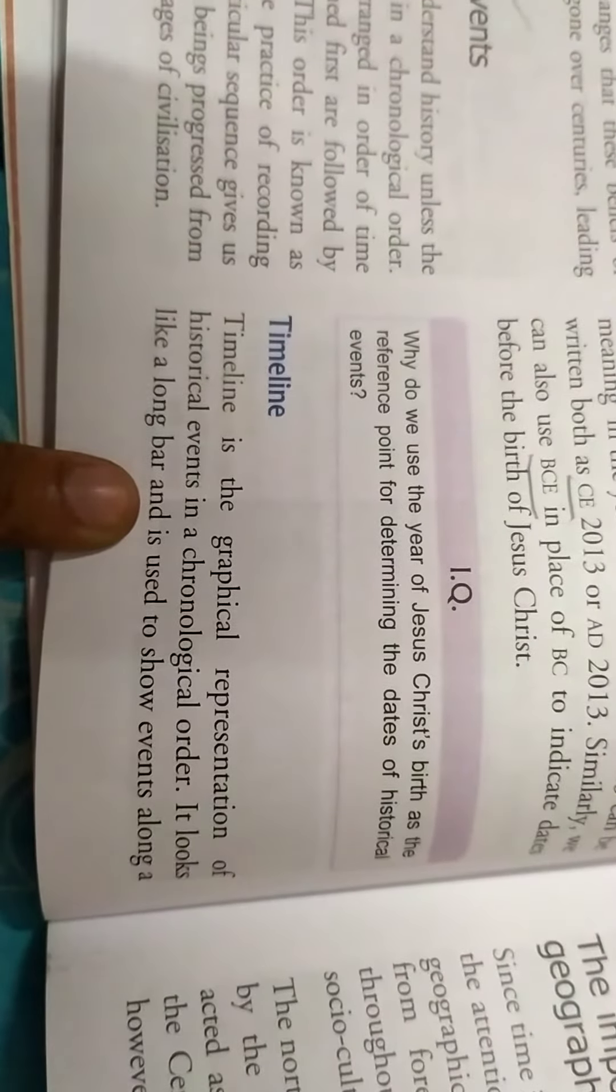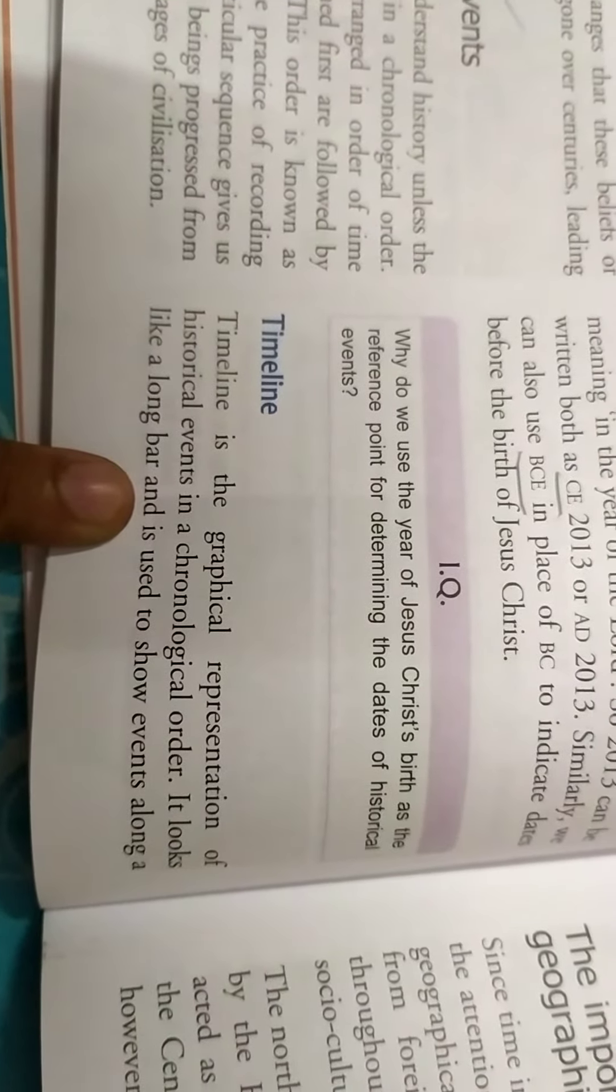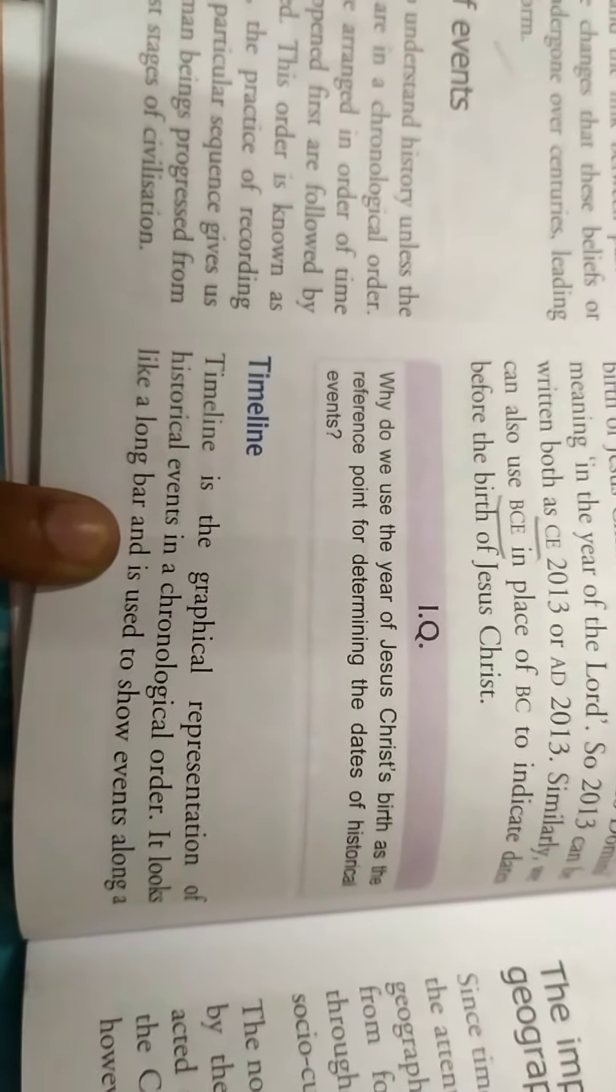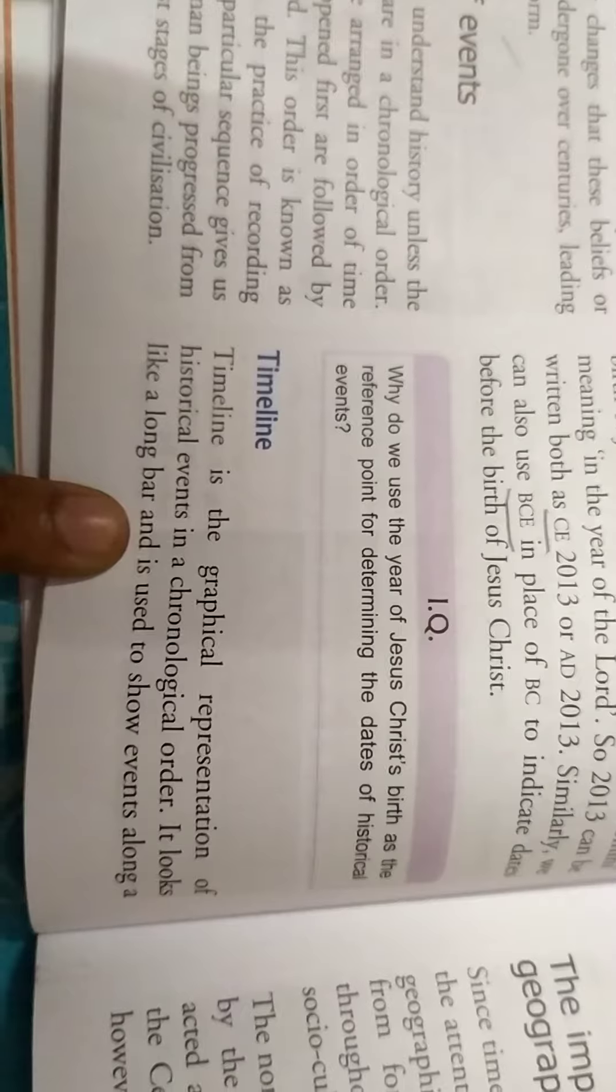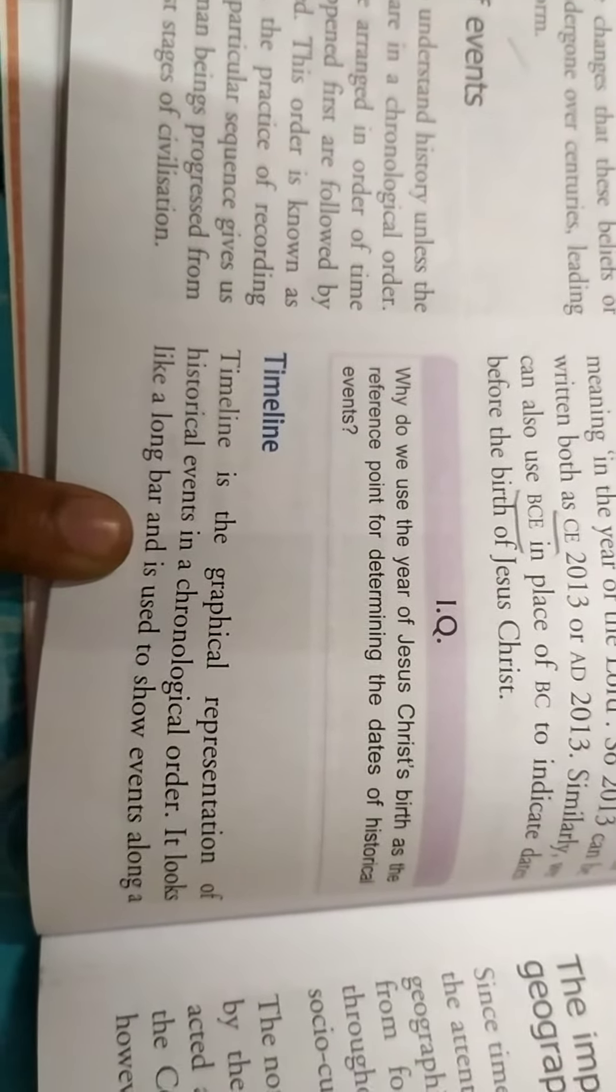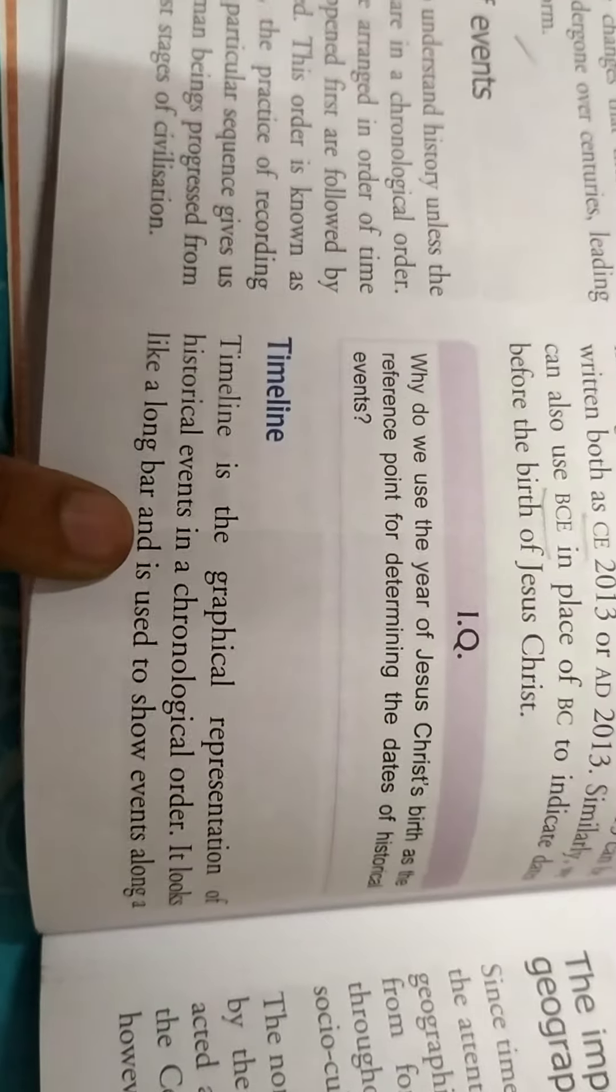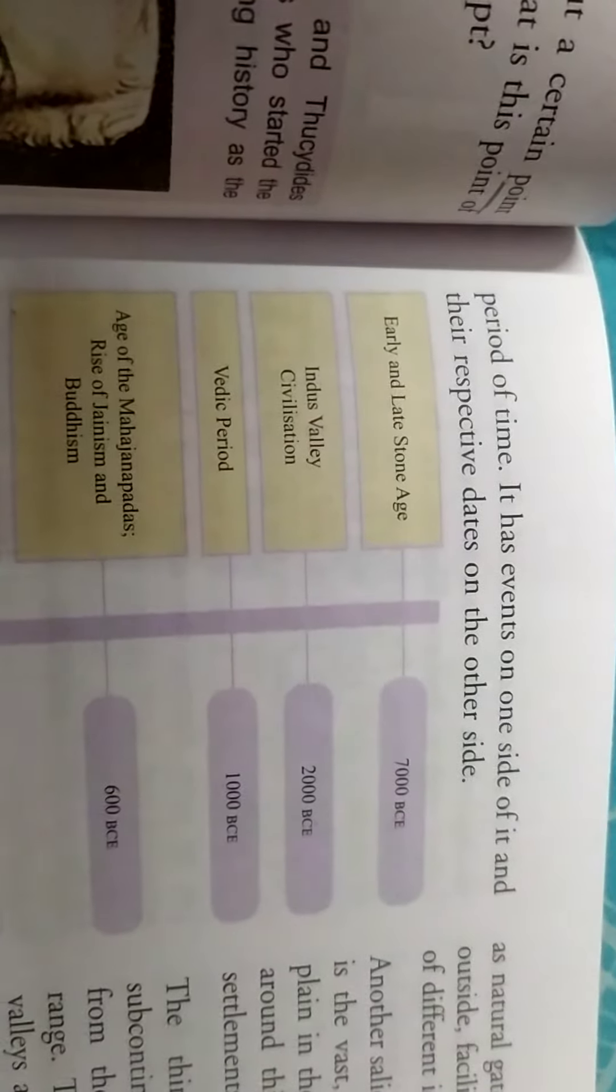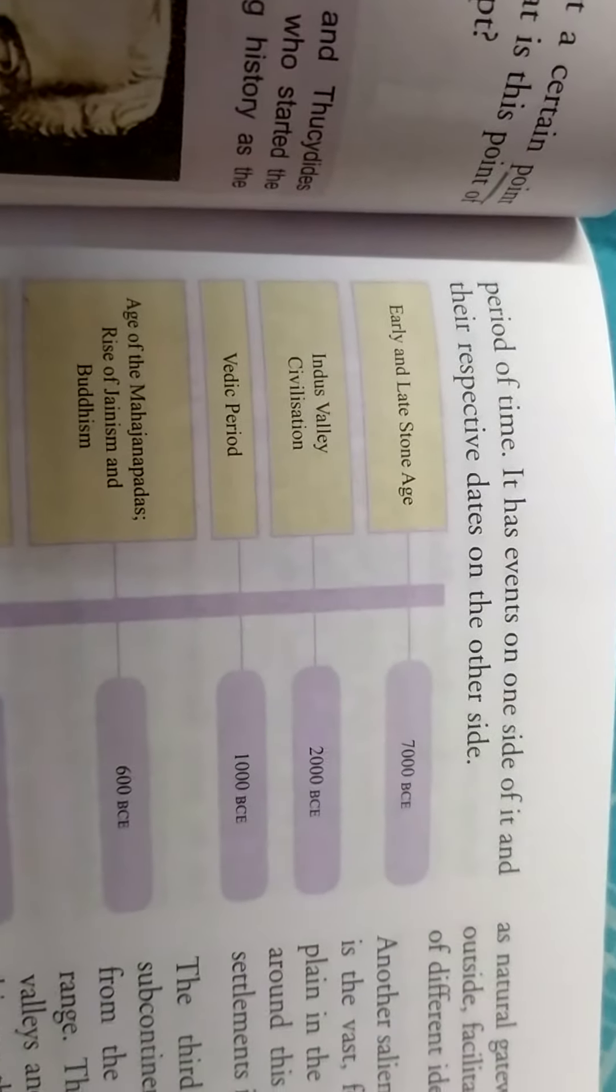Timeline means a graphical representation. We will learn in a graph form what are the different historical events that took place in chronological order. It looks like a long bar and is used to show events along a period of time. It has events on one side of it and their respective dates on the other side.